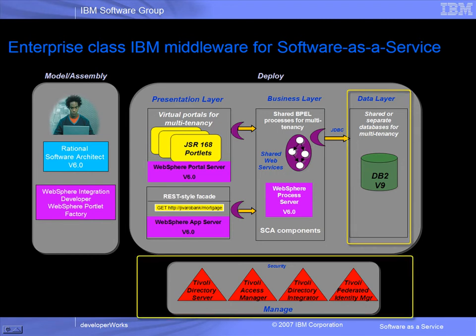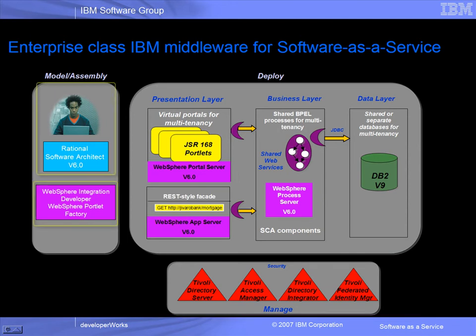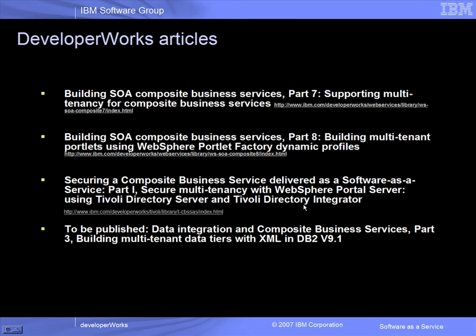Multiple Tivoli Security Products, for example Tivoli Directory Server, were used to secure our software-as-a-service solution. Rational Software Architect, WebSphere Integration Developer, and WebSphere Portlet Factory were used for modeling and developing configurable service components and metadata. The Developer Works articles listed here provide more details on the architectural patterns used for addressing the technical challenges discussed in this demo series.